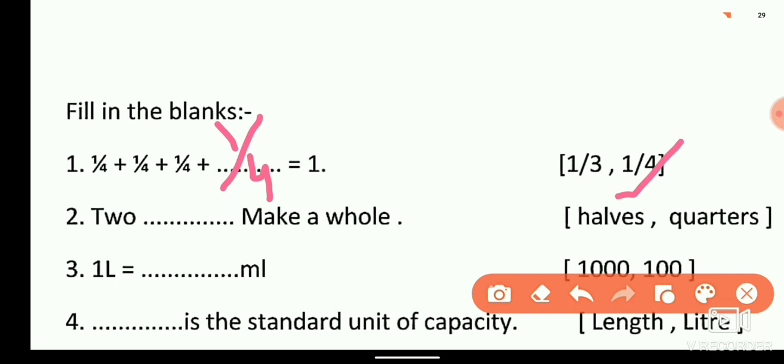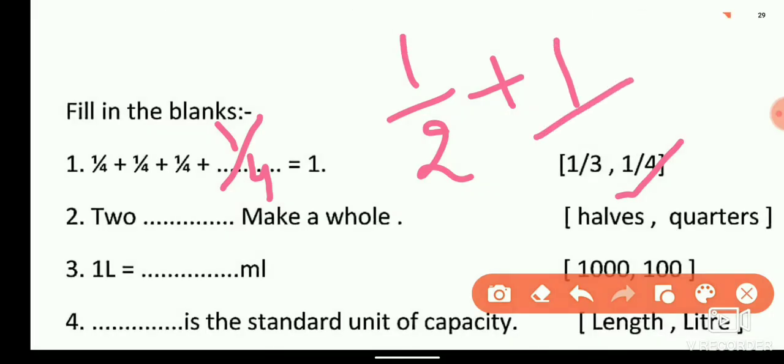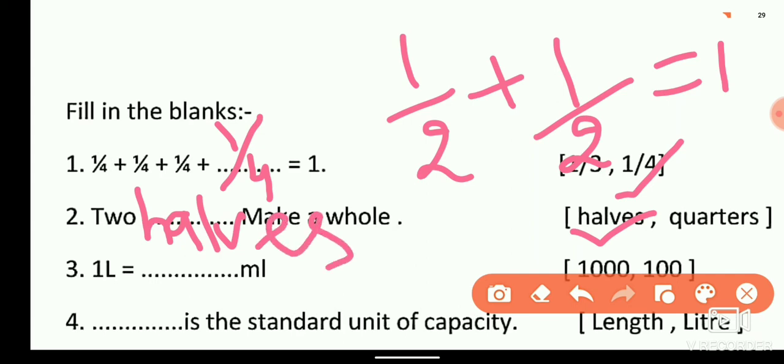Now let's see question number 2: two blanks make a whole. If we write 2 halves, 1/2 and 1/2, it will equal 1. Similarly, this statement says that 2 halves make a whole. So we will write 'halves' here.